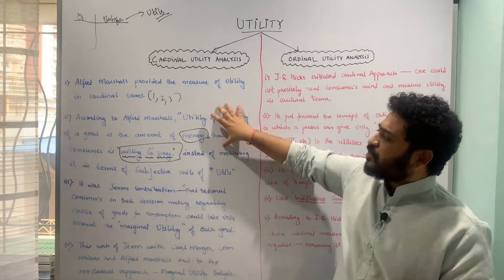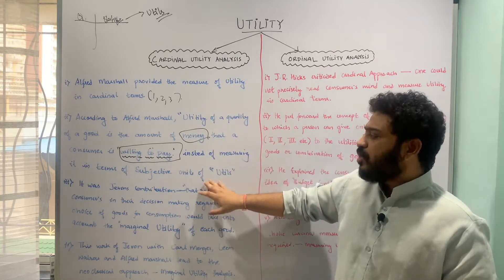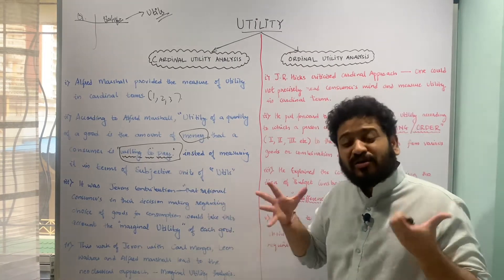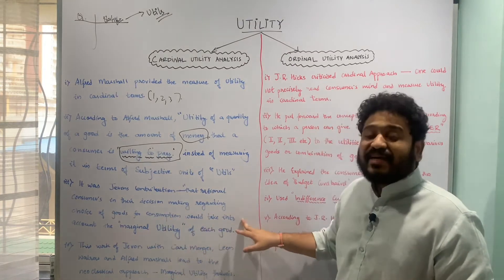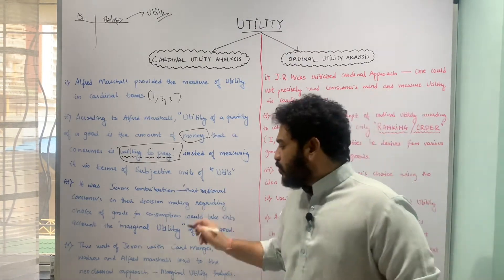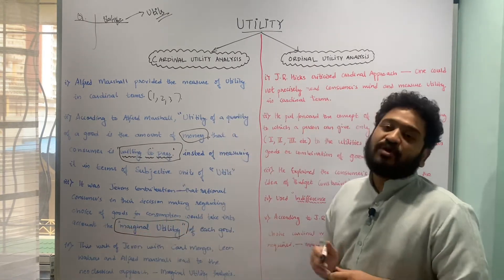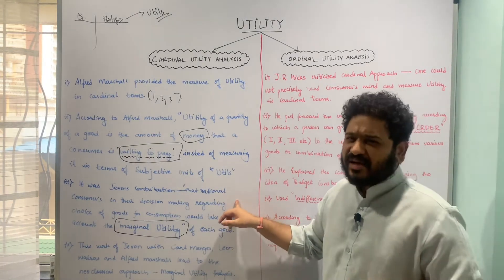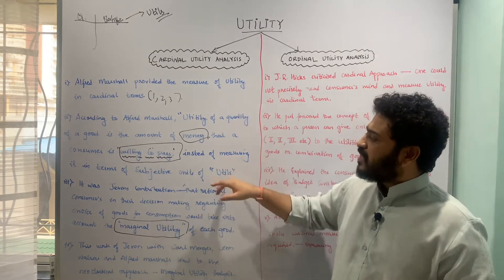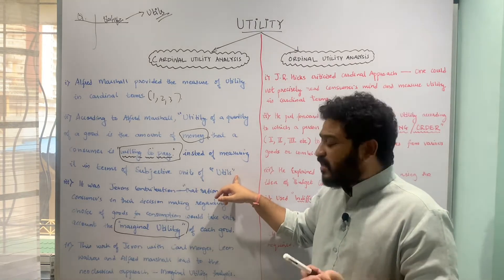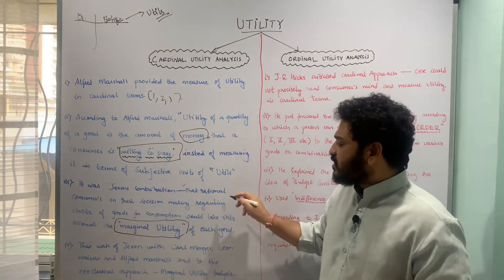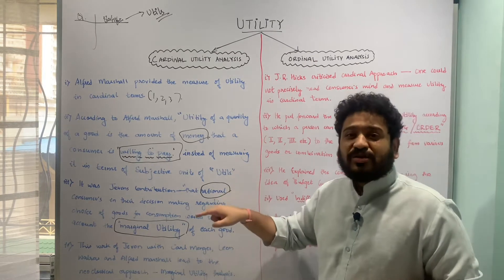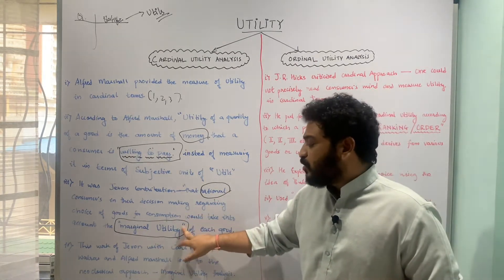The background to Marshall's approach rests on the works of William Stanley Jevons, who contributed that any rational consumer, in their decision-making regarding the choice of a good for consumption, would take into account the marginal utility of each good. So this cardinal utility analysis approach is also called the marginal utility analysis approach.